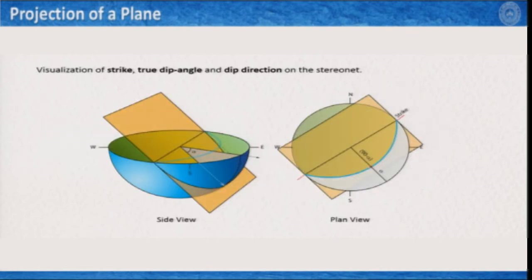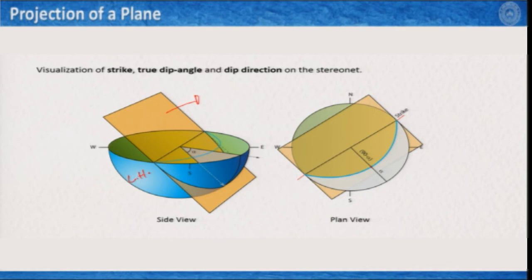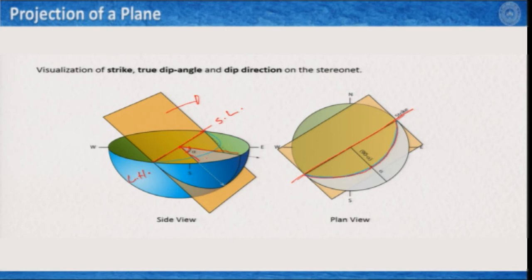To visualize this differently, here is another illustration. We see the sloping plane passed through the center of the sphere — this is the lower hemisphere. The intersection line between the equatorial plane and the dipping plane is your strike line, and this angle is your dip angle. If we look at this in plan view, this is the strike line, this is the projection of the plane, and this angle defines the dip angle alpha, with the remainder being 90 degrees minus alpha.